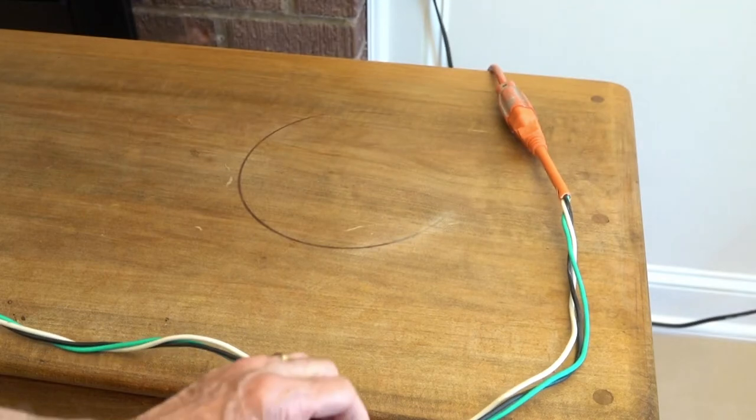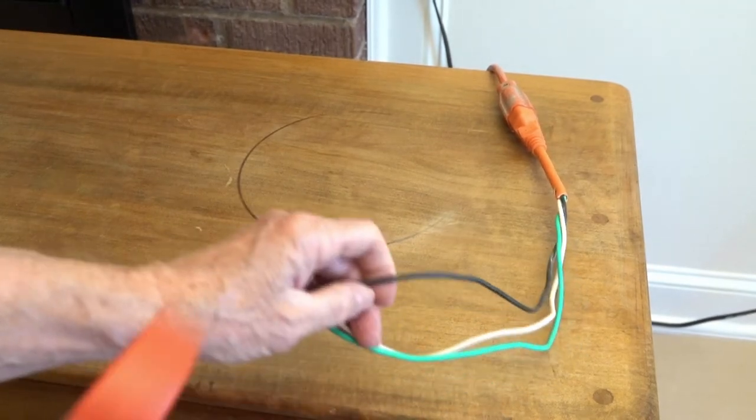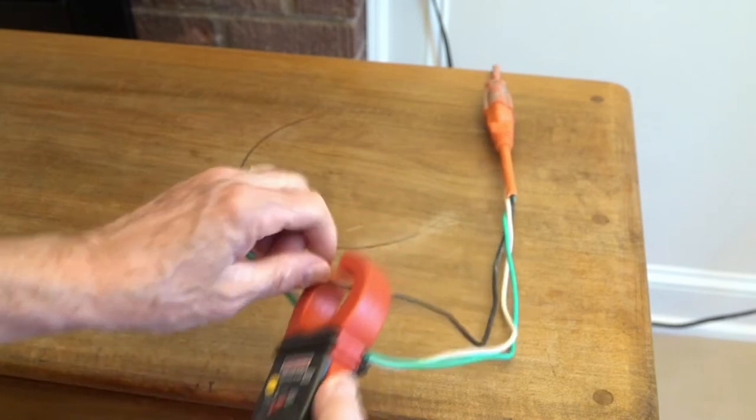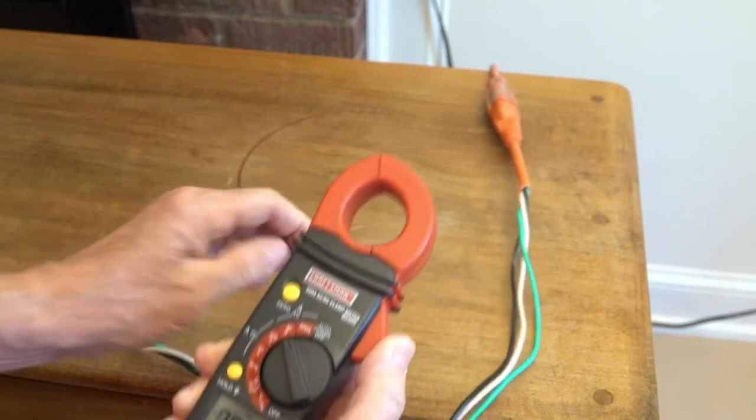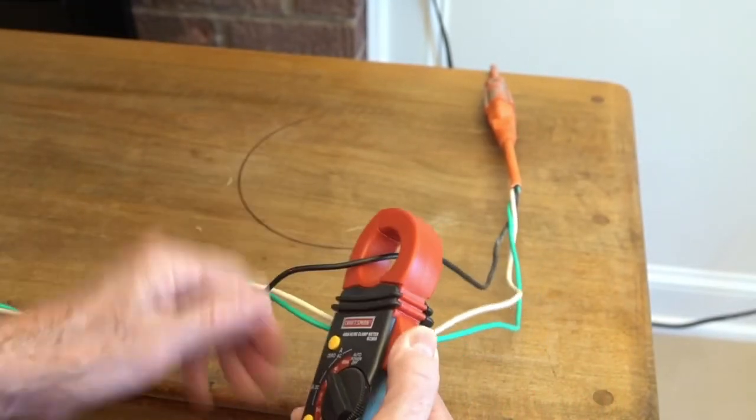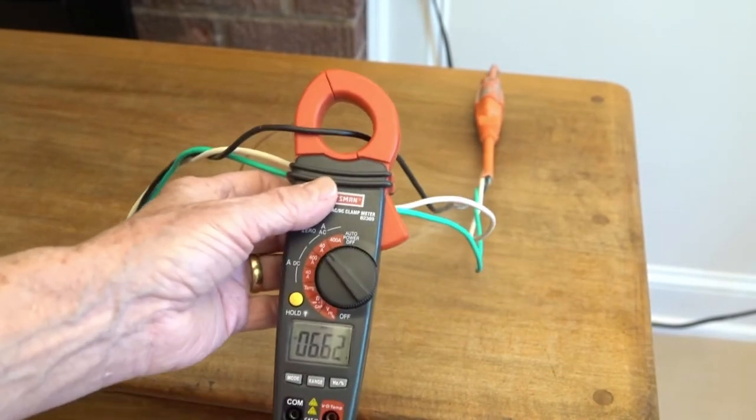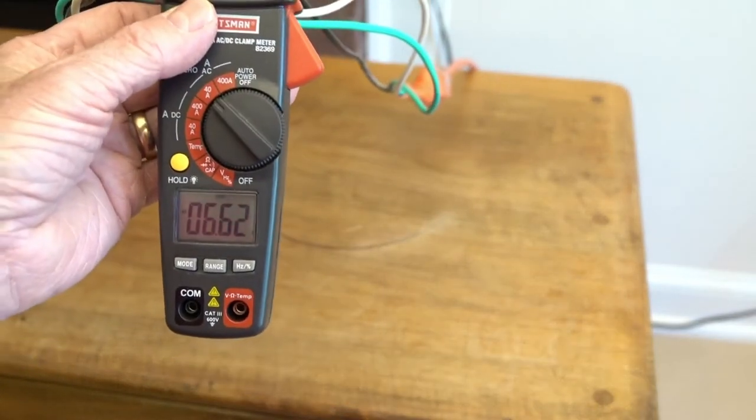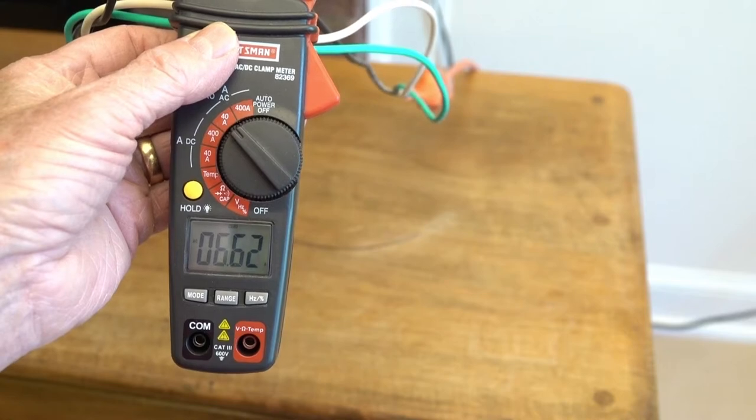Okay, we're hooked up to a thousand watts of halogen work light. We'll just clamp this. Let's zero this first. Okay, here we're on the black lead, just normally the hot lead. We can see that we're at 6.62 amps.